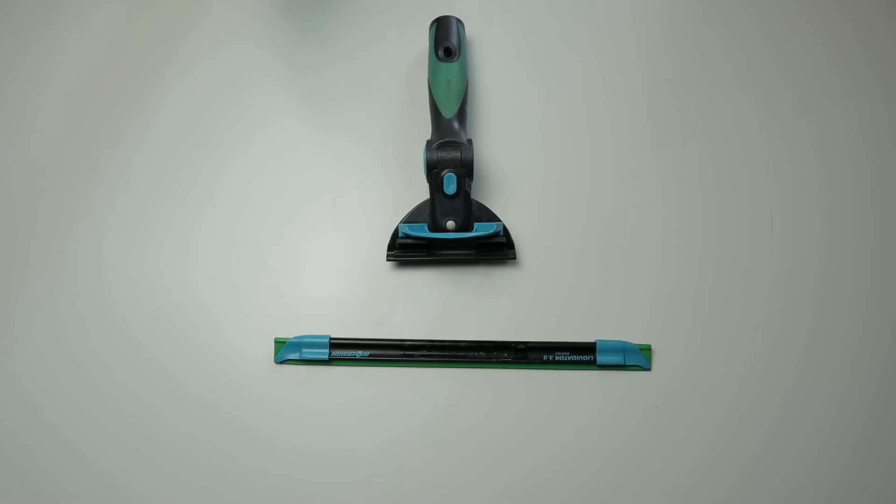We will now have a quick look at what is called a precision squeegee. This one is called the Mormon Liquidator. This squeegee is designed to reduce or completely eliminate the solution on the window.